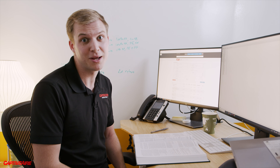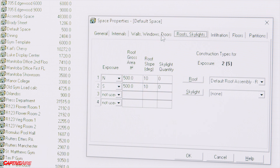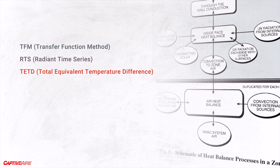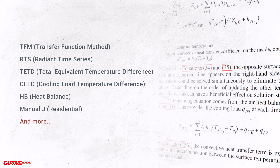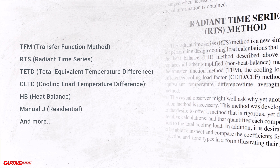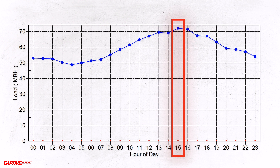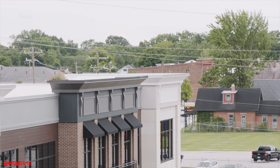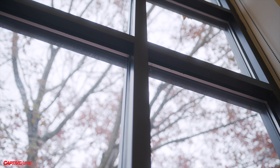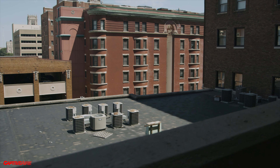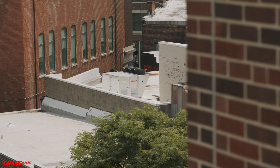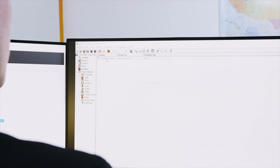Today we'll work through an example using software that follows the transfer function method to calculate loads. Over the years there have been a number of different methods developed to calculate heating and cooling loads, and some people argue one is better than another. But when looking for peak loads — just the hour of the day that has the highest heat gain in the space — that's what we size our tonnage and airflows around. Whether you use radiant time series (RTS) or the transfer function method, those numbers will almost always be similar enough to get a good representation of loads.